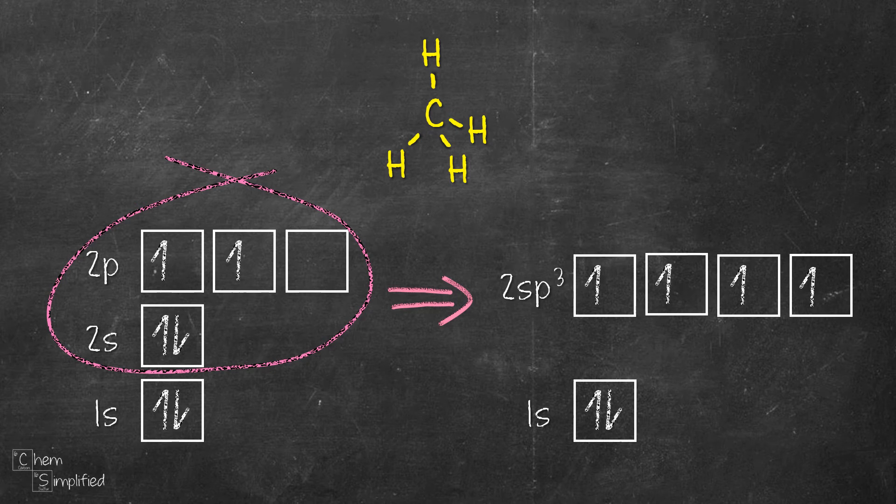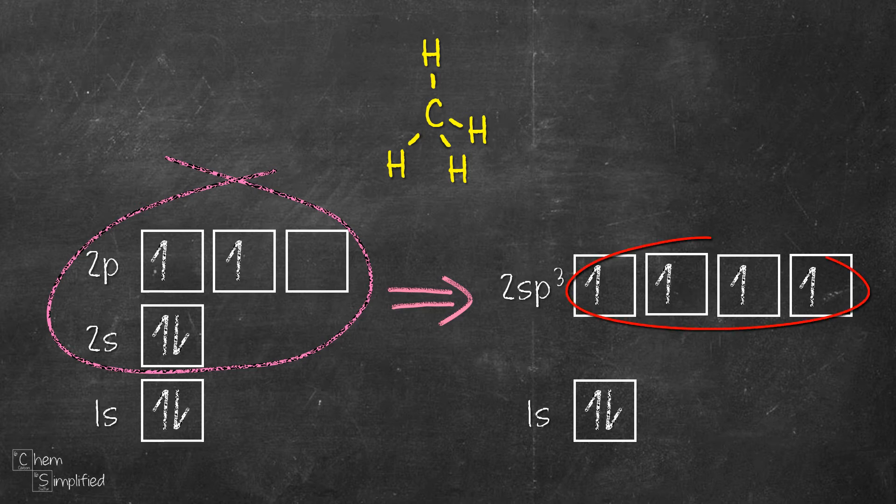However, if we mix one of the s with 3 of the p orbitals to get 4 sp3 orbitals, that 4 sp3 orbitals is going to contain 4 unpaired electrons, therefore making it possible to bond with 4 hydrogens. That's why orbitals go through hybridization.